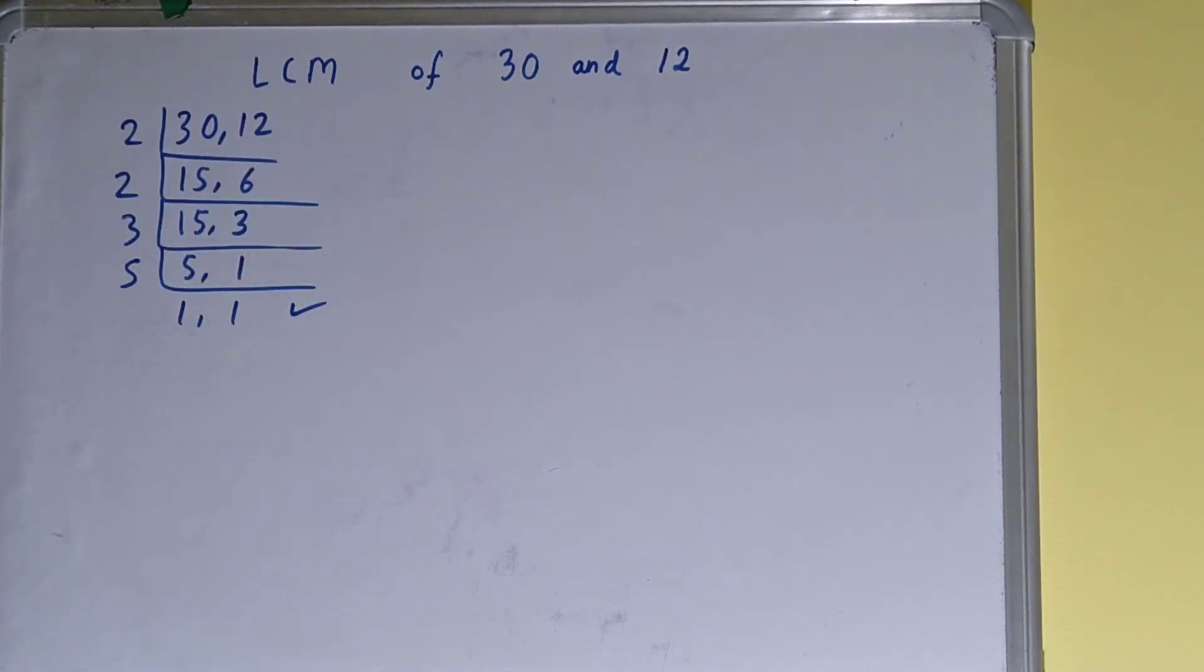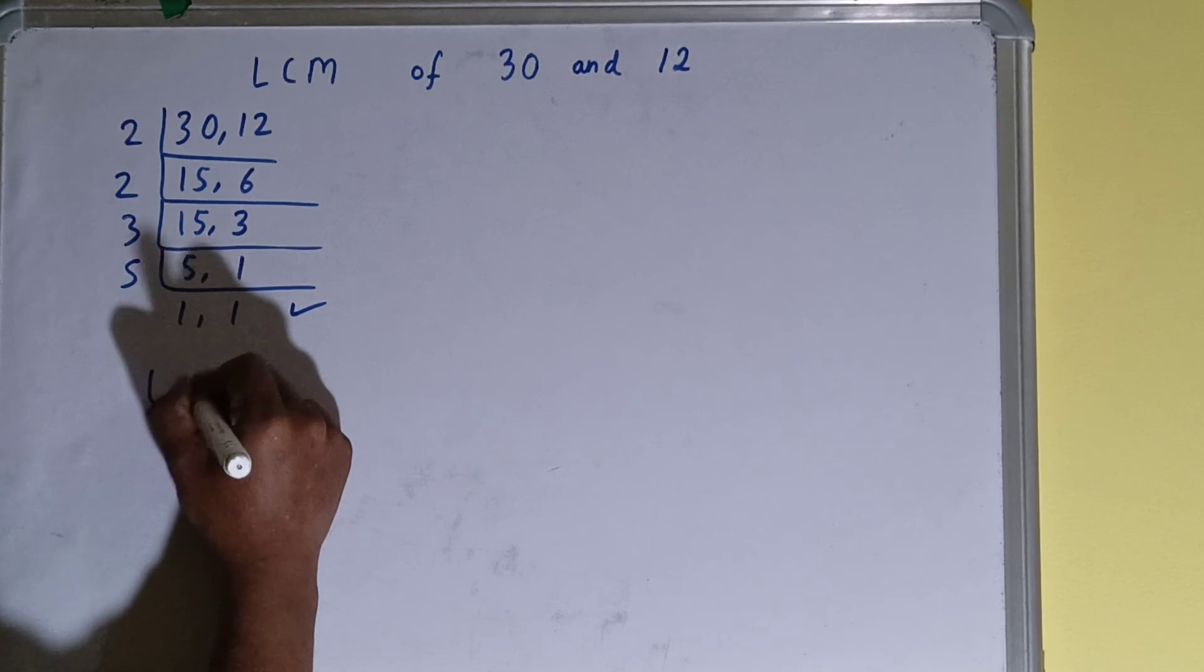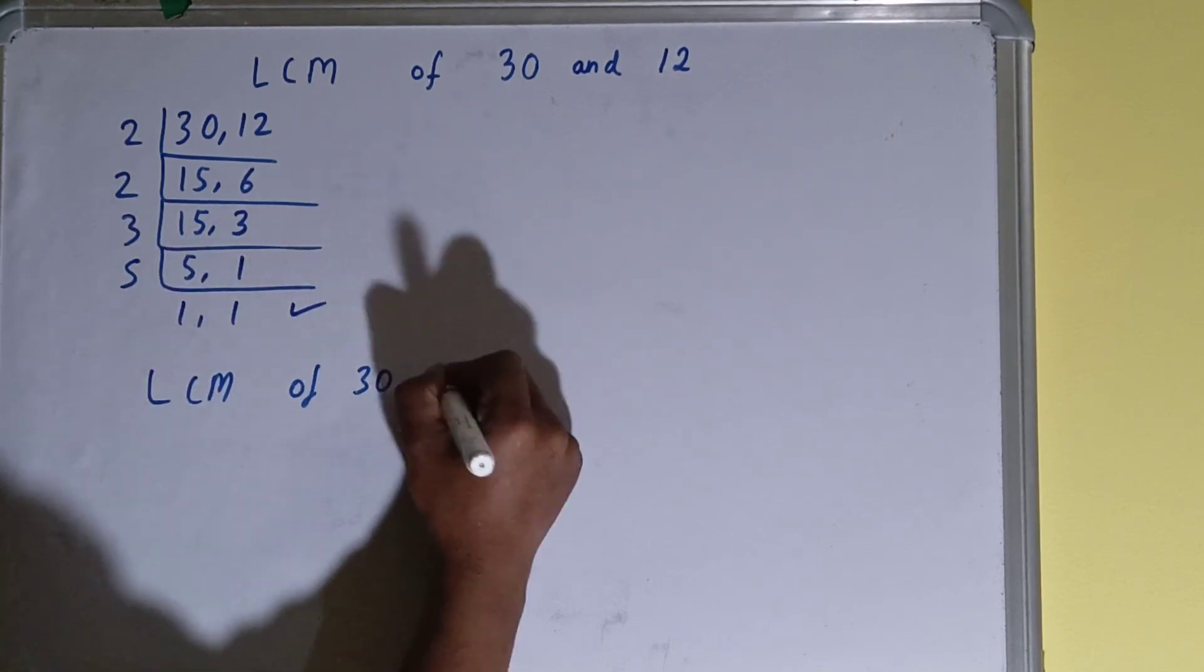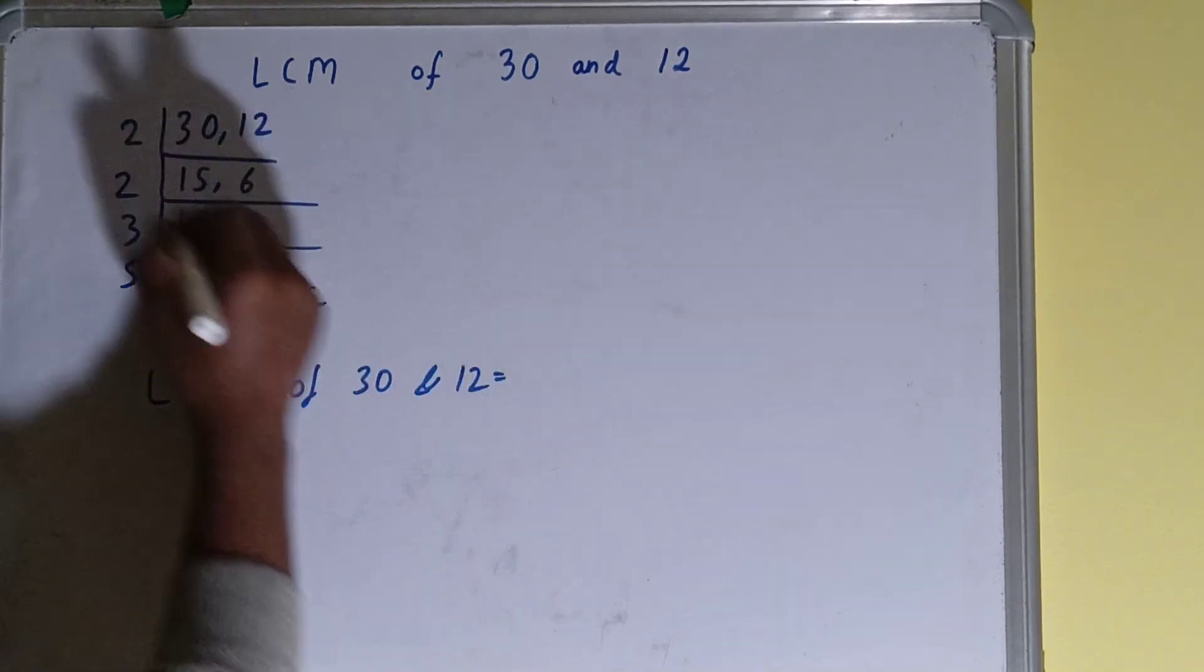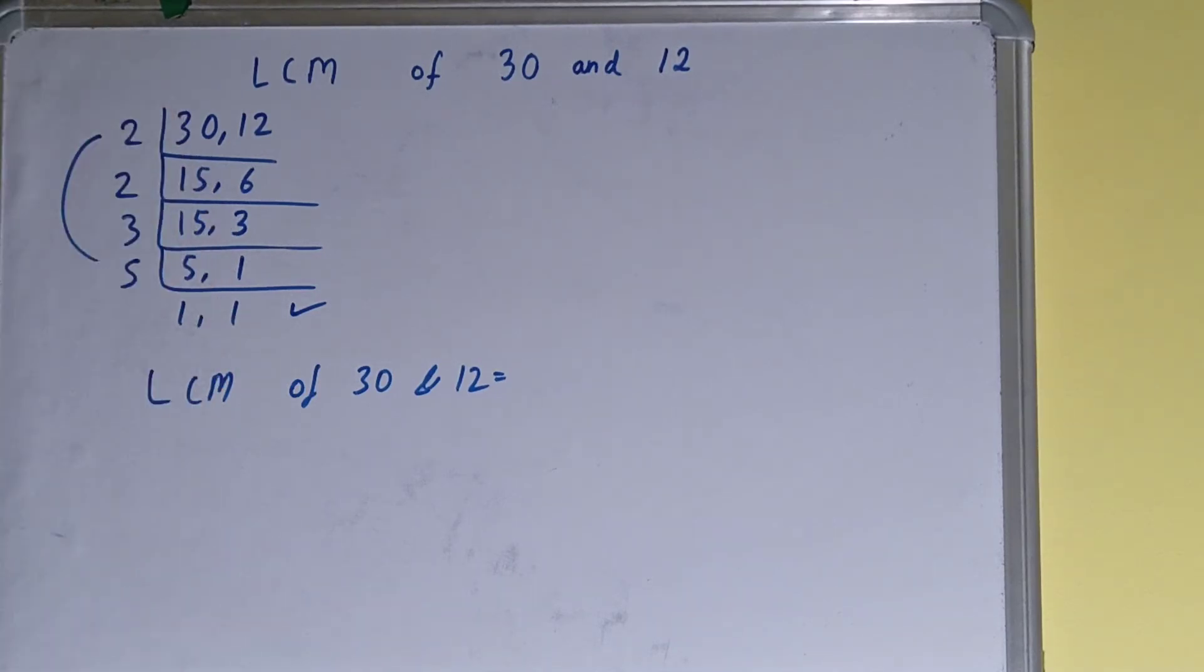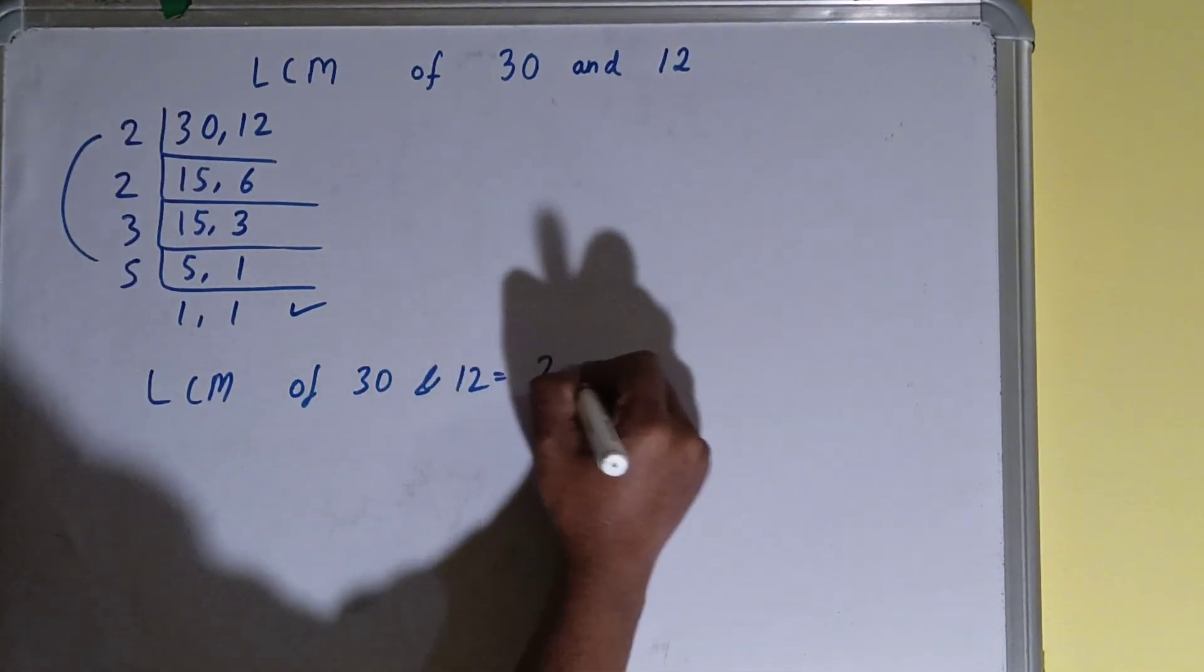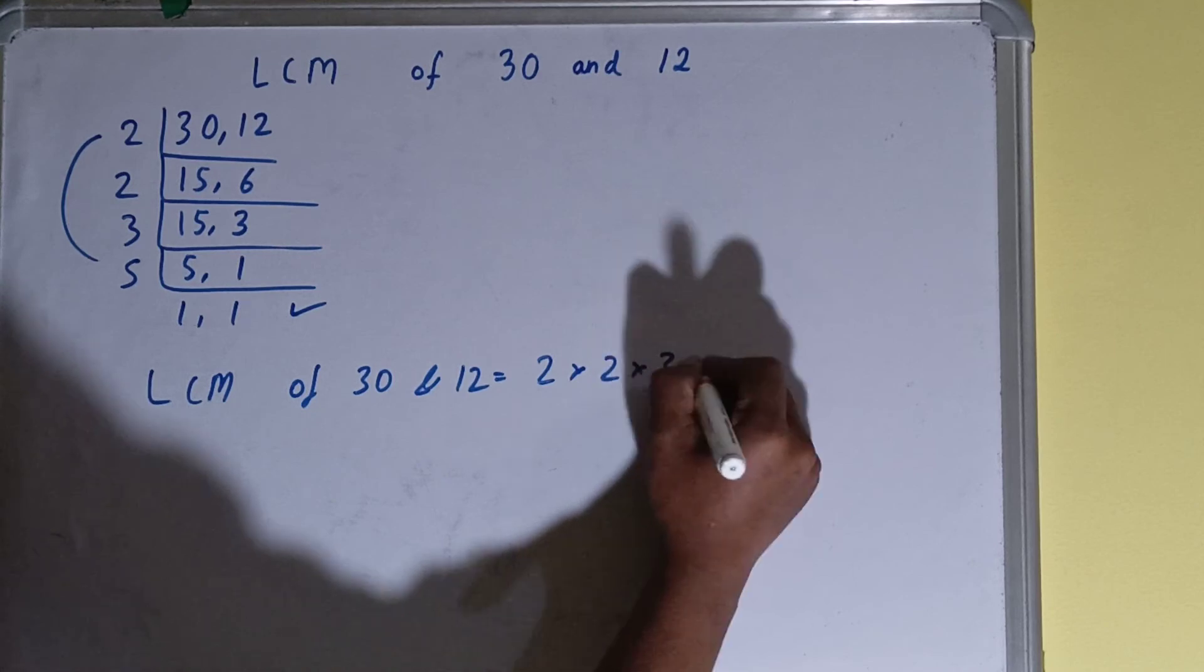We need to do one last thing: LCM of 30 and 12 is equal to multiplying whatever you have got on the left-hand side, that is 2 × 2 × 3 × 5.